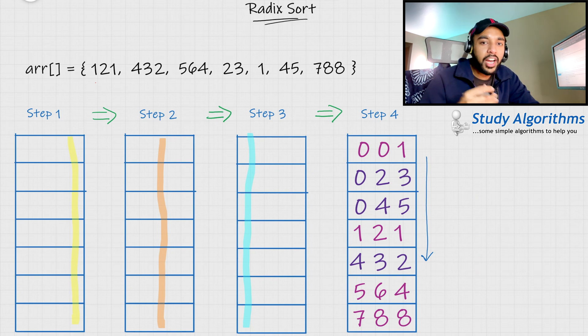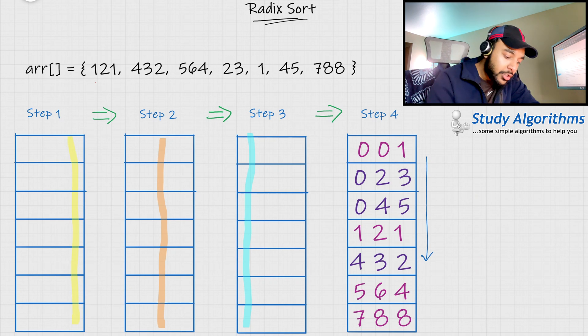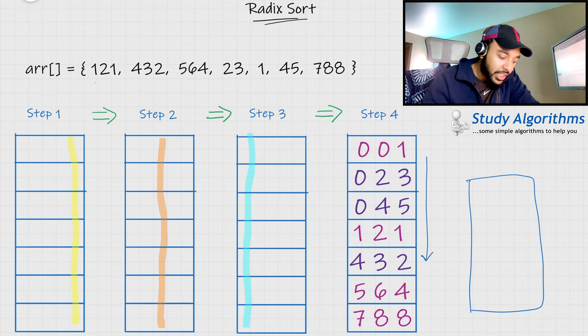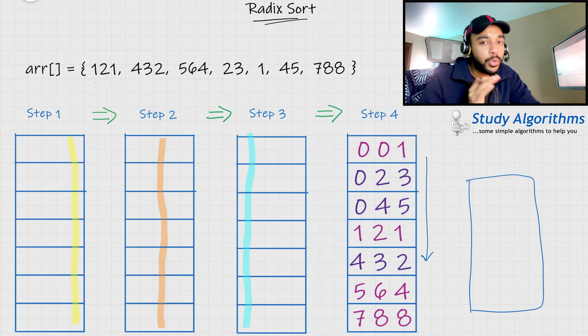Similarly, if you had one more element in the array that had say, let's say four digits, you would just have to create one more step 5 where you would be again moving all of these elements using the digit in the thousands place. Now, if this concept is clear to you, let us do a dry run of the code.